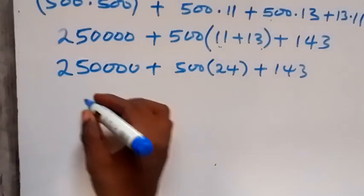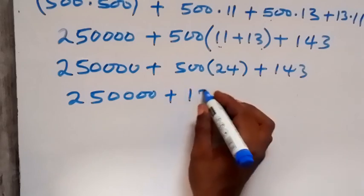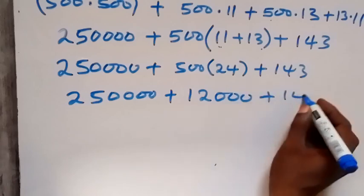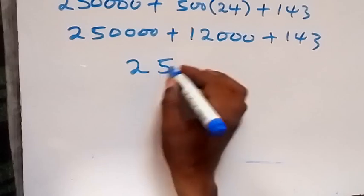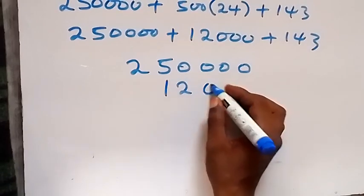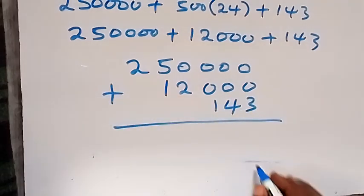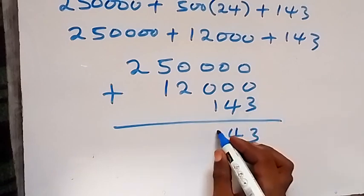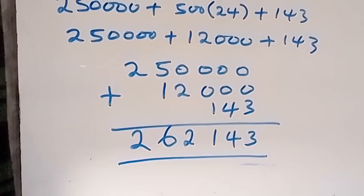Then plus 143. So when we add this up from here, we have 250,000, then plus 12,000, plus 143. So when we sum this from here, this gives us 3 here, then we have 4, we have 1, then 2, 6, 2. So we have 262,143 from here. So therefore, the simplified form of this is 262,143.